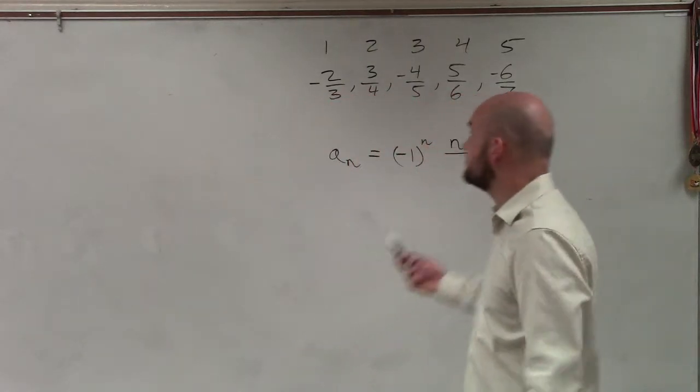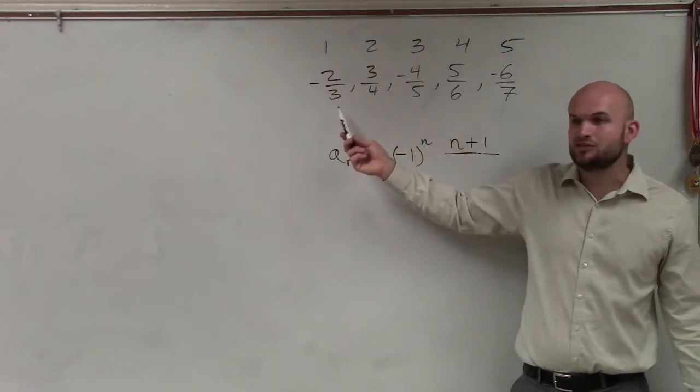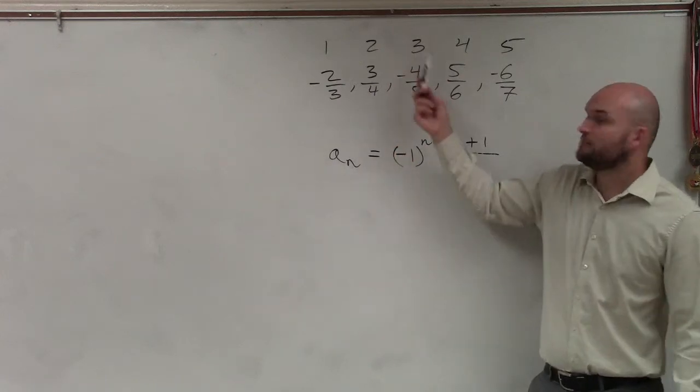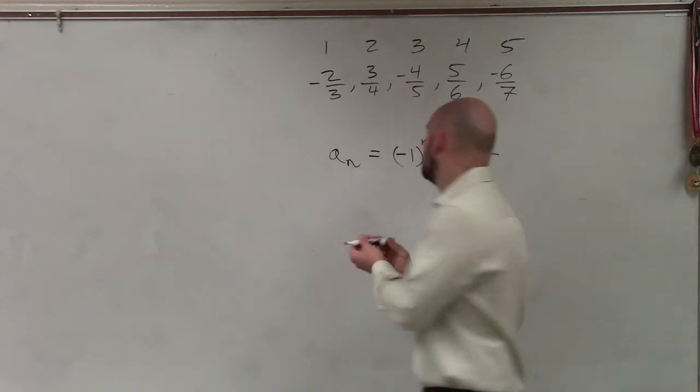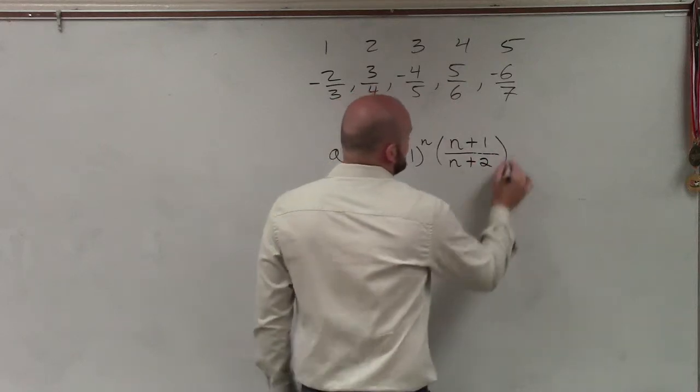Then let's look at the denominator. To go from one to three, we have to add two. From two to four, add two. From three to five, add two. So my rule for the denominator is N plus two.